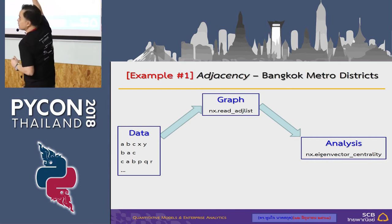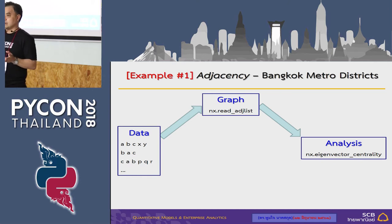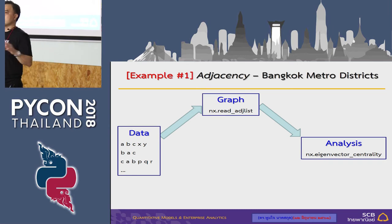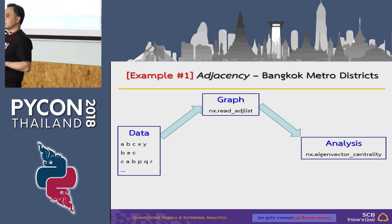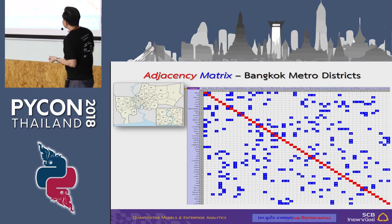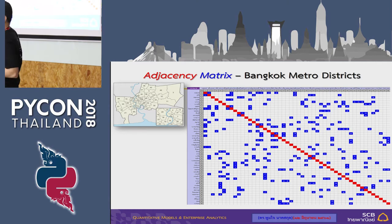The adjacency is between Bangkok metro districts — about 50 districts. There is no further information about each district; only the connection matters. By connection I mean who is adjacent to whom. The matrix shown is basically a 50×50 boolean matrix of 0s and 1s representing who is adjacent to whom.